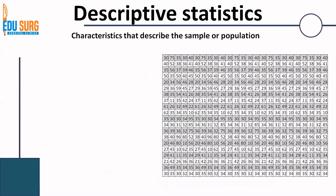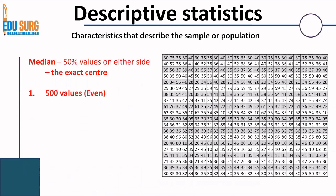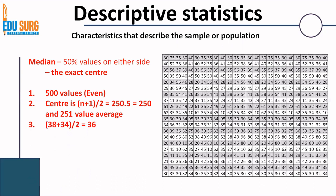For our 500-value data, to describe this sample using descriptive statistics: we can calculate the median, that is the exact center. For even numbers, the center is at position (n+1)/2, which is 501/2 = 250.5. What that means is we take an average of the 250th and 251st values after arranging values in ascending or descending order. In this data, that comes to 36 because the 250th and 251st values are 34 and 38. In the case of odd numbers, say 11 values, the median is at position (11+1)/2 = the 6th value.